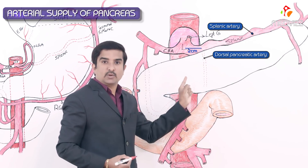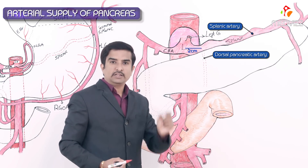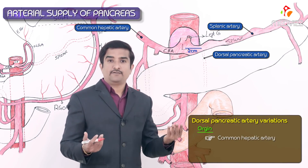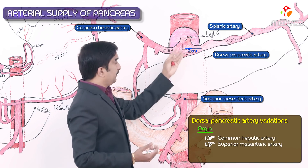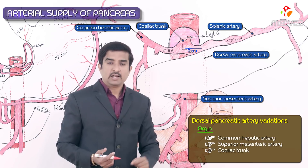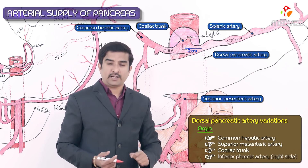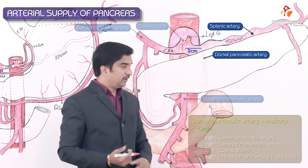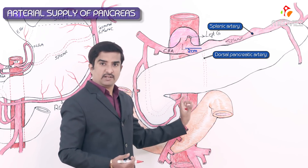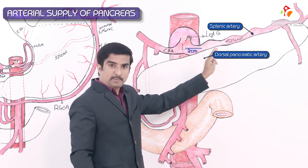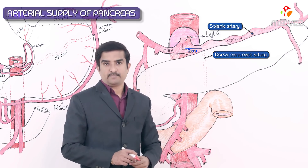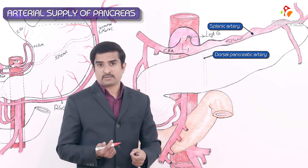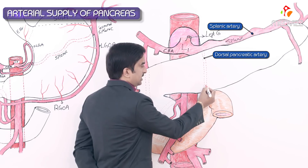The dorsal pancreatic artery arises from the proximal two centimeters of the splenic artery, although it may also originate from the common hepatic artery, the superior mesenteric artery, directly from the celiac trunk, or even from the inferior phrenic artery — more commonly the right inferior phrenic artery. However, according to Grey's Anatomy 41st edition, it most commonly arises from the proximal splenic artery. This artery is short.